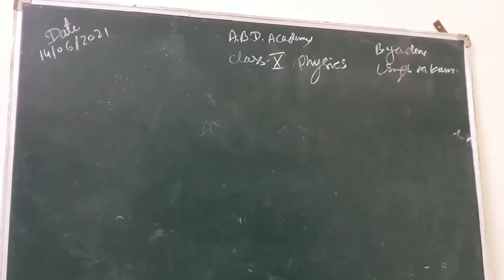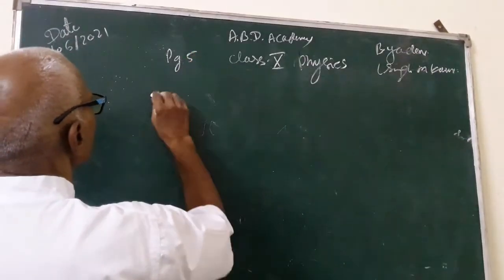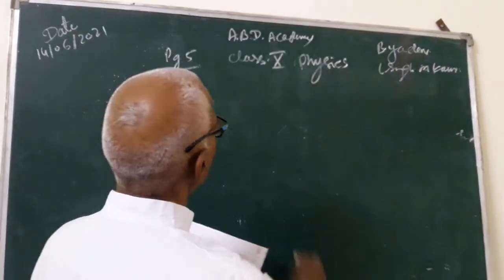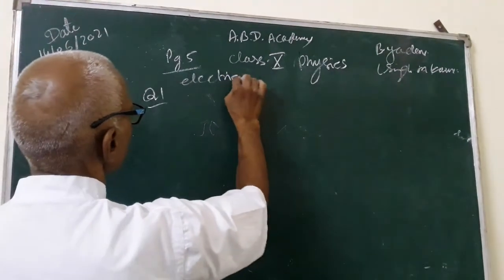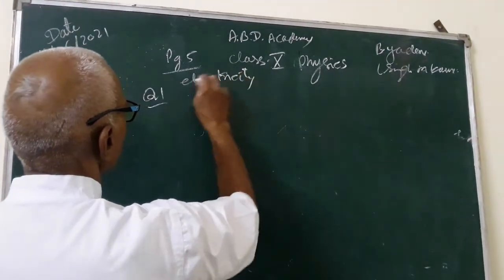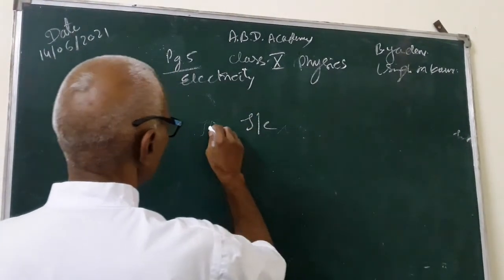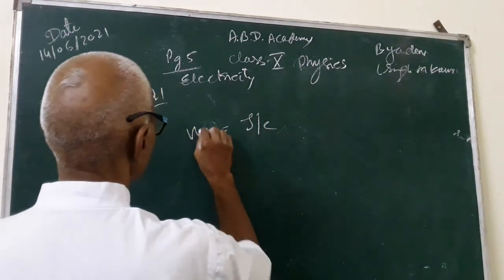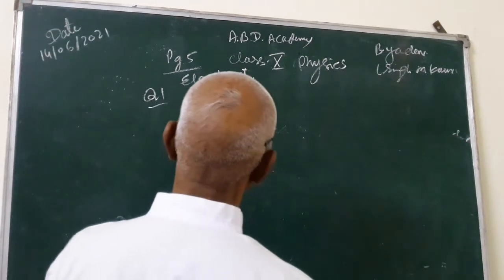Joule upon Coulomb is correct. Question 1 on page 5. Question number 1 of electricity chapter. It asks Joule per Coulomb is known as what name? So student it is volt.